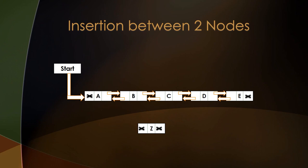Whenever a new node is created, both its pointers are null pointers since it does not contain any addresses. So now let's begin with the insertion. First, we'll change the backward pointer of node Z to point to node B, since B would be its previous node. Next, we'll change the forward pointer of node B to point to node Z rather than node C, since node Z will be the next node for B.